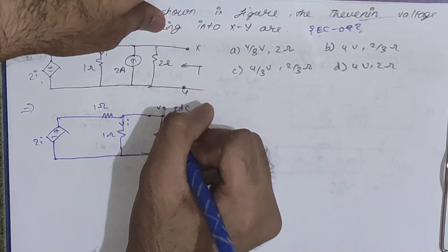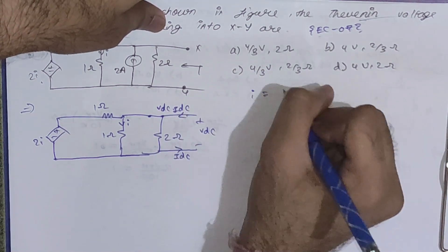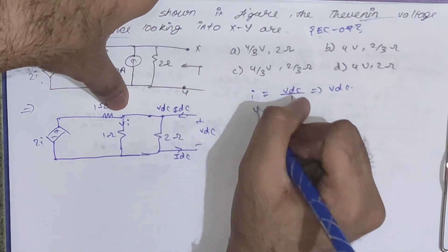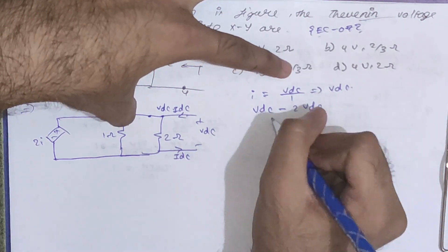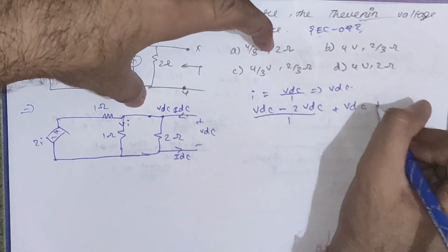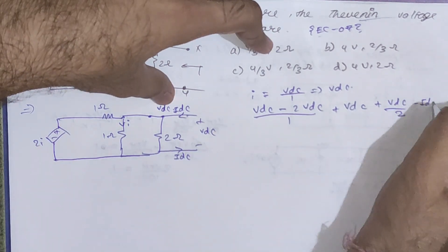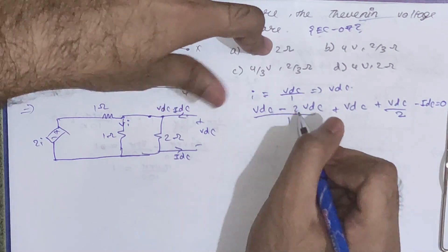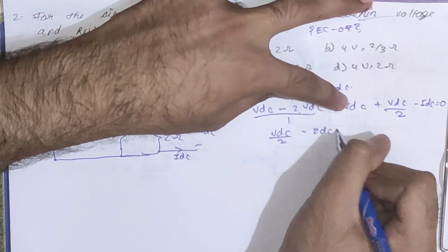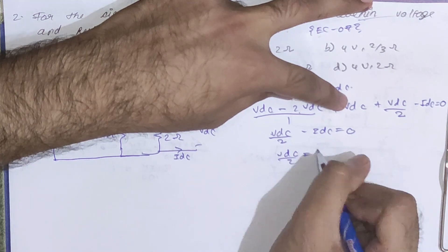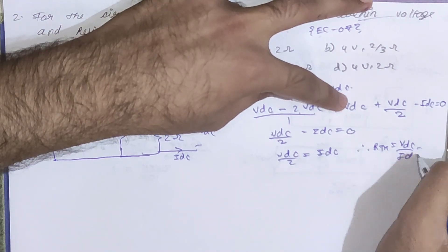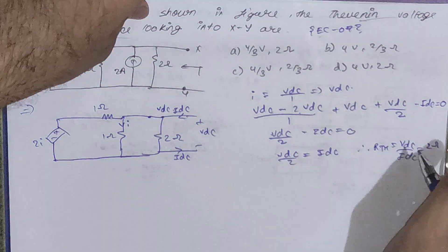We are left with a 2 ohm resistor, Vdc, and Idc. The current I = Vdc / 1 ohm = Vdc. Applying KCL: (Vdc − 2I)/1 + Vdc/1 + Vdc/2 − Idc = 0, giving Vdc − 2·Vdc + Vdc = 0, leaving Vdc/2 = Idc. Therefore Rth = Vdc/Idc = 2 ohm.